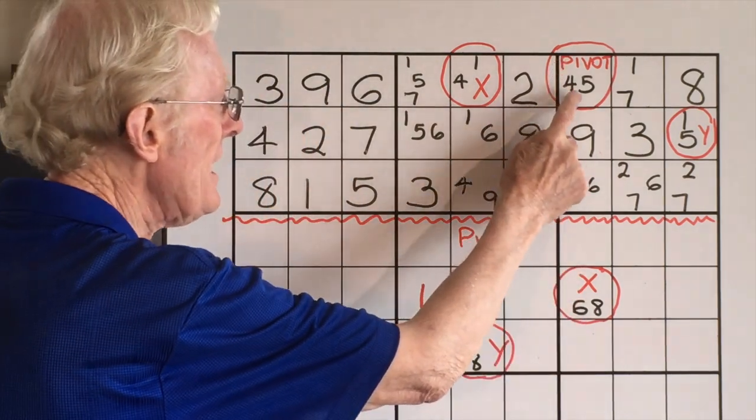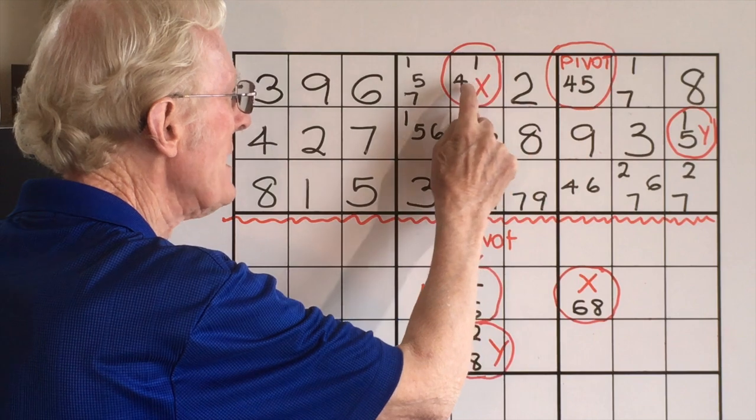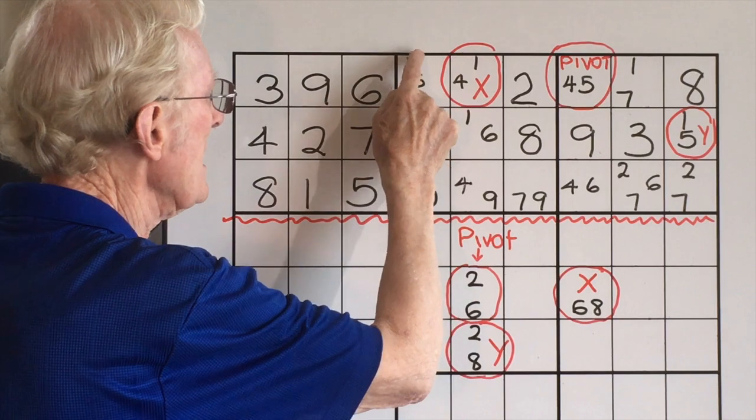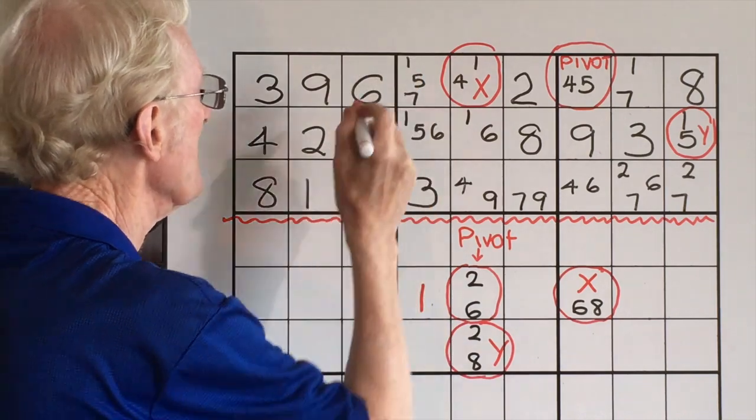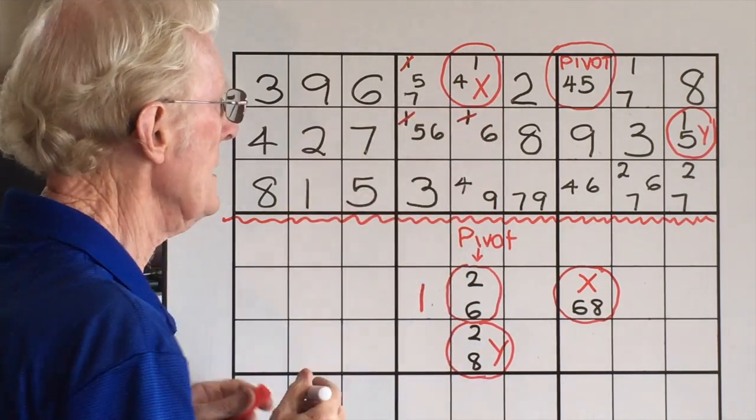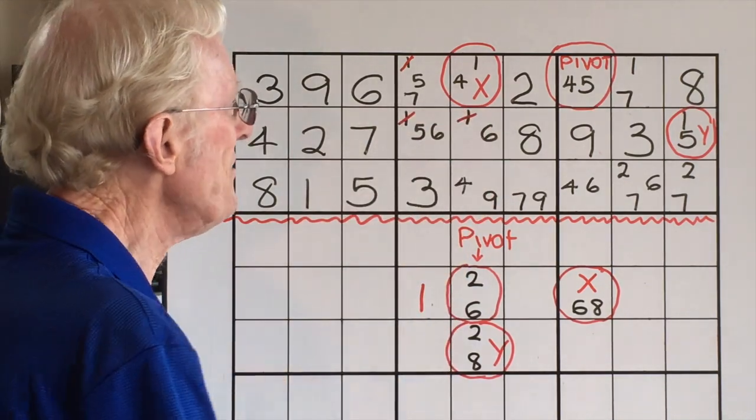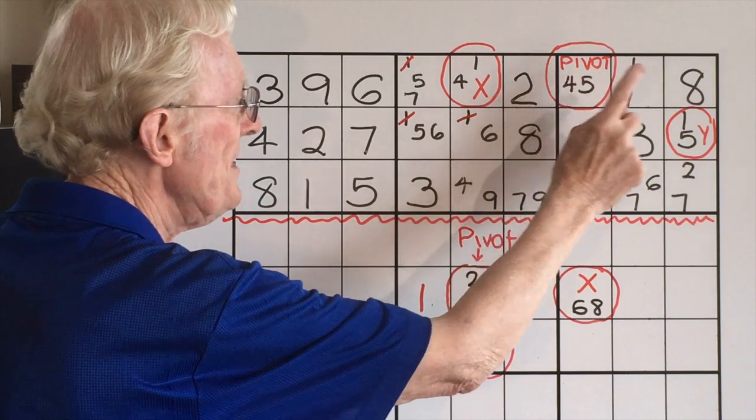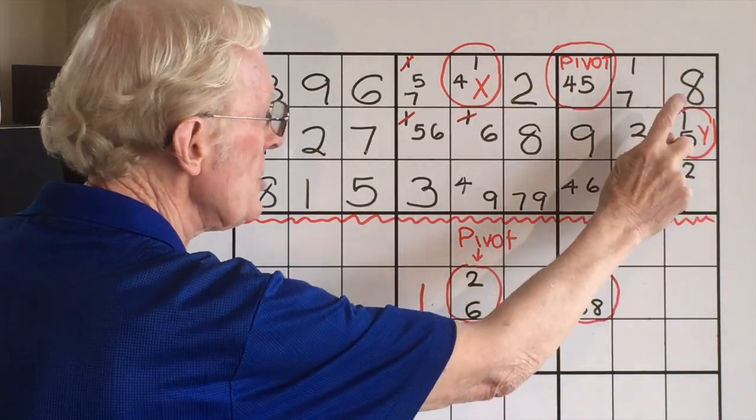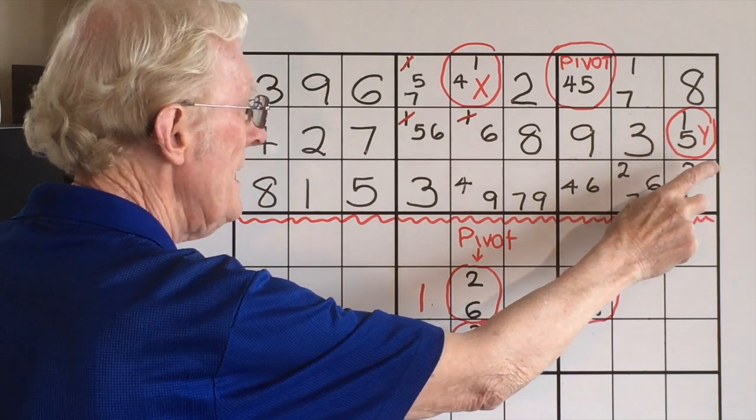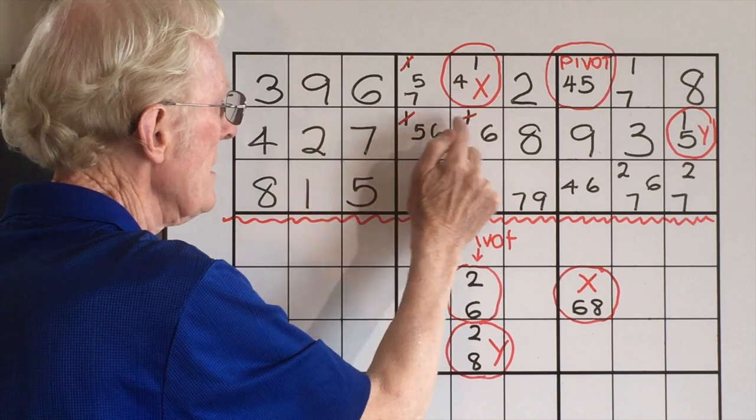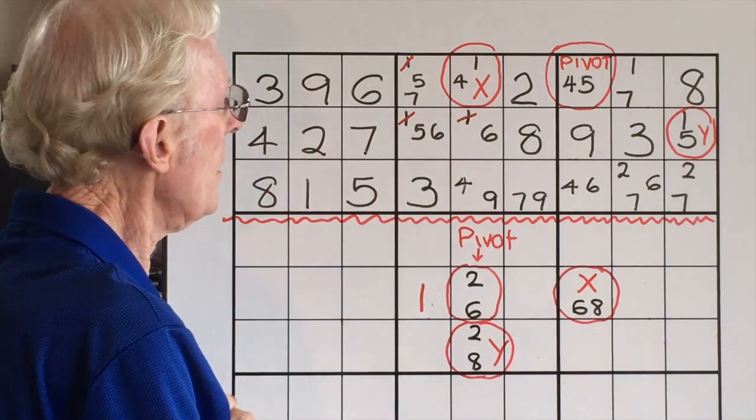If this is a 4 then this becomes a 1. If this becomes a 1 then that 1 is eliminated. And this 1 is eliminated. Now if this becomes a 5 then that 5 is eliminated because it's in the same block. So this also becomes a 1. And because that's a 1 that verifies that this here should be eliminated. That 1 should go.